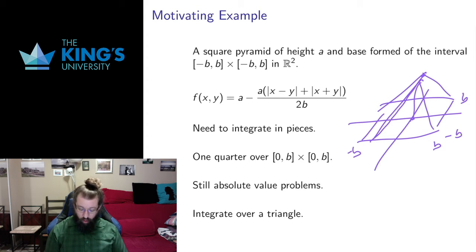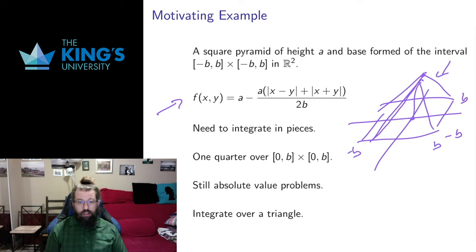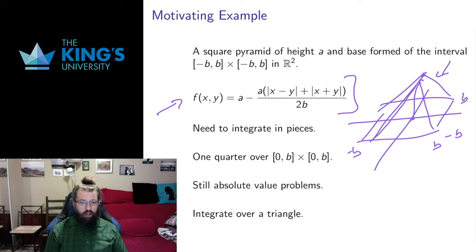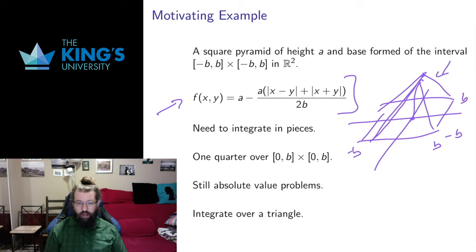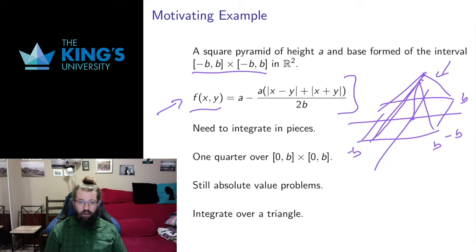If you want this to be the graph of a function, the function you need has a bunch of strange pieces involving absolute values in various combinations. Not going into the details of how I derived this function, but this function will give you a square pyramid over the interval negative b to b times negative b to b. So I would like to integrate this function — that's how I find the volume under the graph of a function. I want to integrate this function f over this interval in R2.